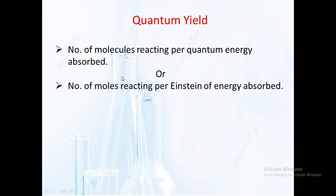Quantum of energy — quantum of energy A is equal to h-nu; Einstein E is equal to N times h-nu. Simple explanation: quantum yield means kitni light absorb ki aur kitna product tayar kiya. Kam se kam light absorb karna chahiye aur zyada se zyada products tayar kiye to quantum yield zyada hogi. Zyada light absorb ki aur products kam diye to quantum yield kam hogi. Molecules ke baare mein dekhen to quantum of energy, aur moles ke baare mein dekhen to Einstein of energy.